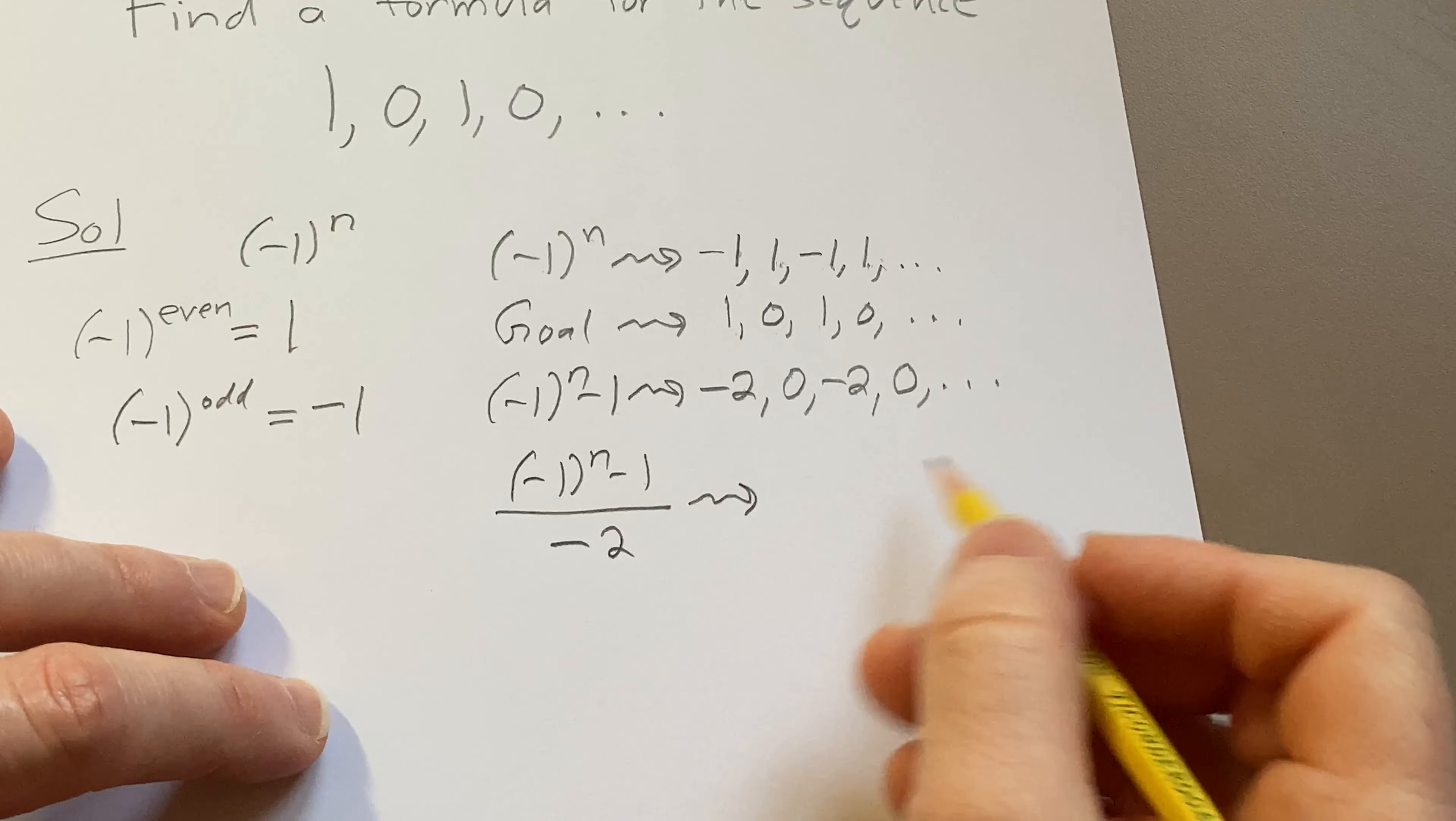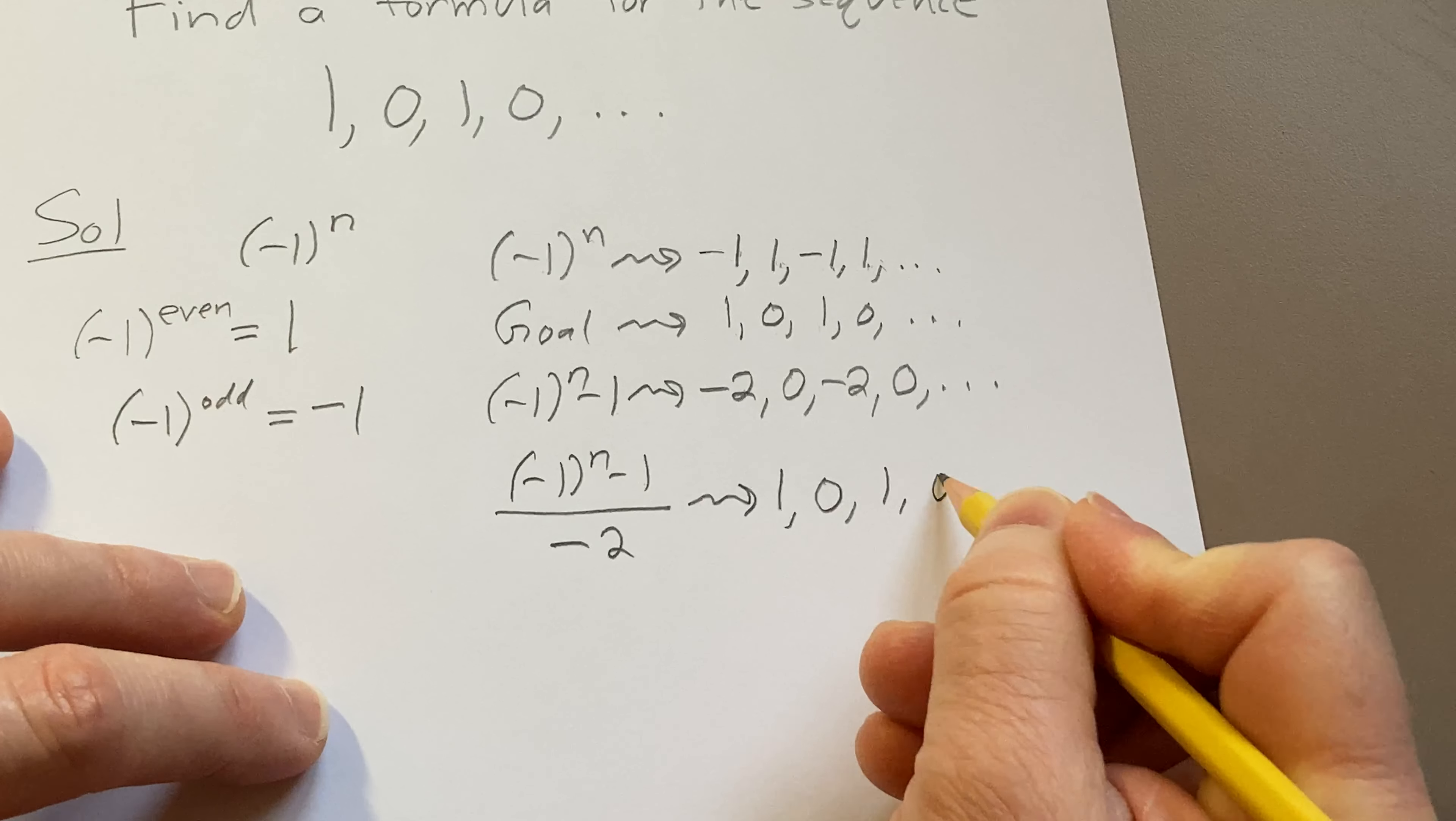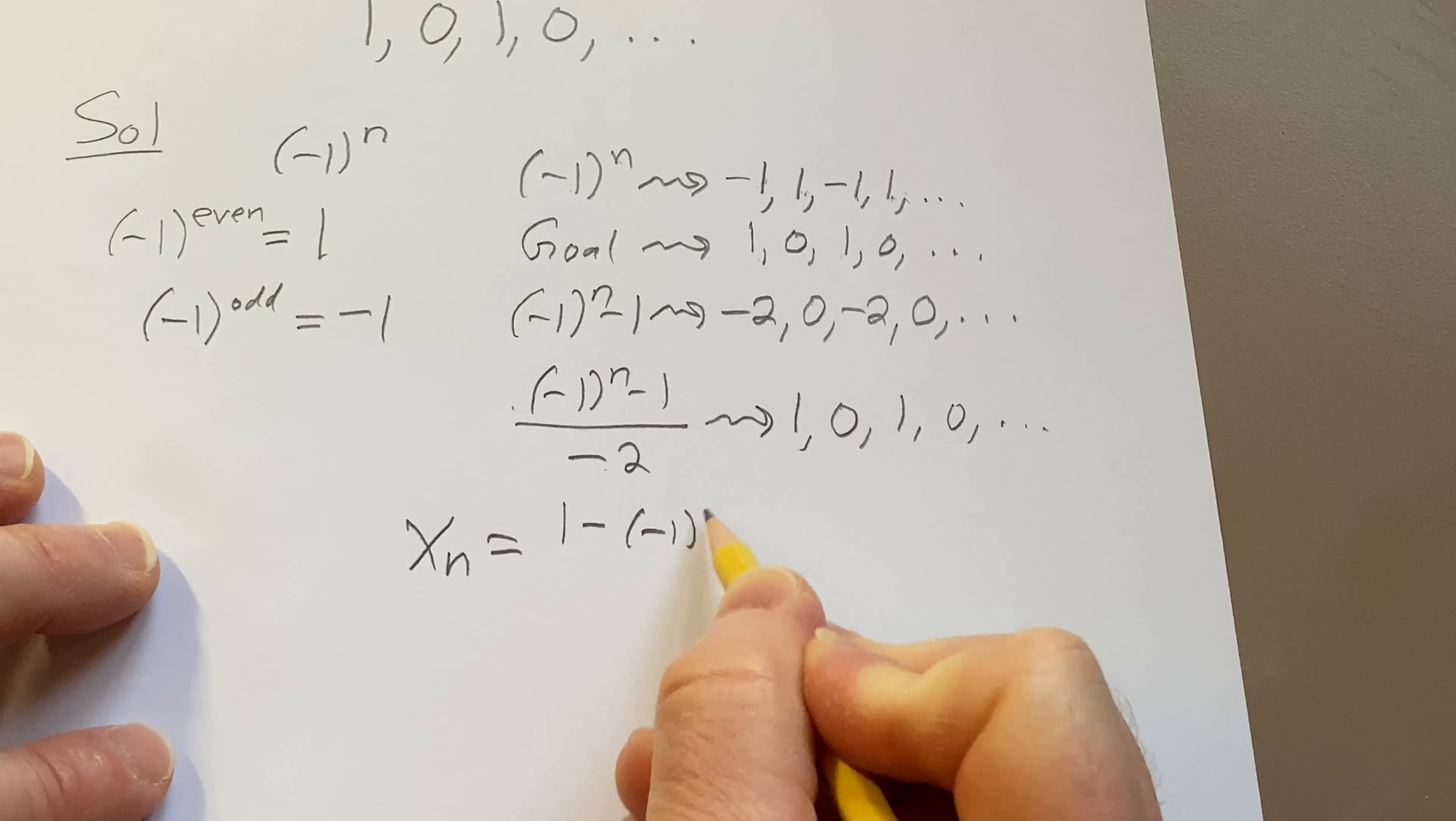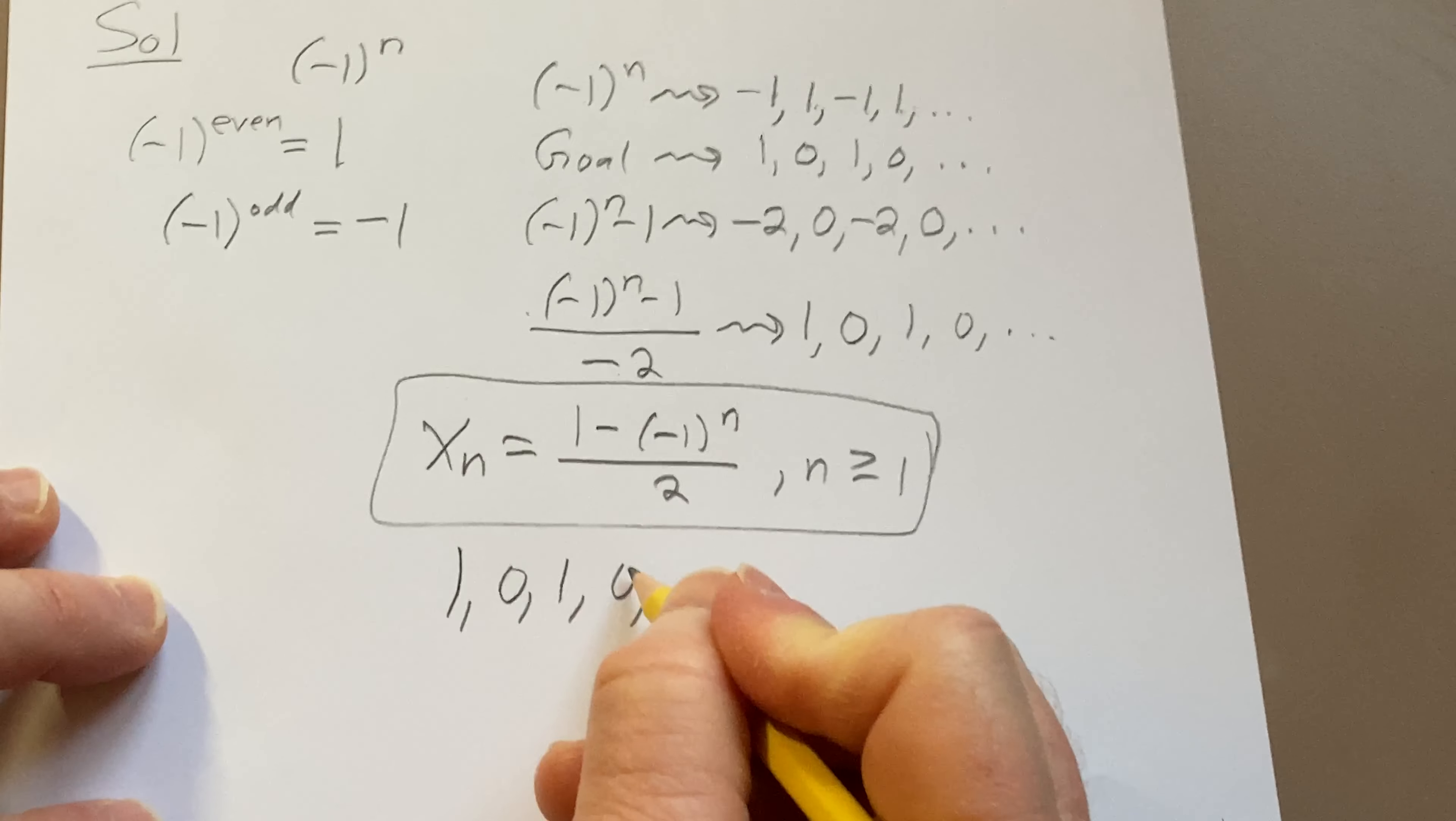And that gives rise to the sequence. By the way, this little squiggly arrow means nothing. That's just my way of thinking. This is going to be 1. And you divide 0 by -2 is 0. 1, 0. Success. So our sequence is going to be, you can bring the negative upstairs, distribute it through, and that will become [1 - (-1)^n] / 2. And this is valid for n ≥ 1. And that's going to give us the sequence 1, 0, 1, 0, etc. Pretty cool.